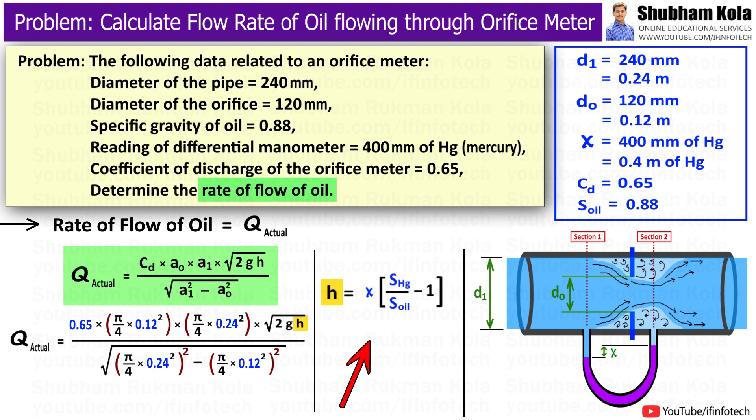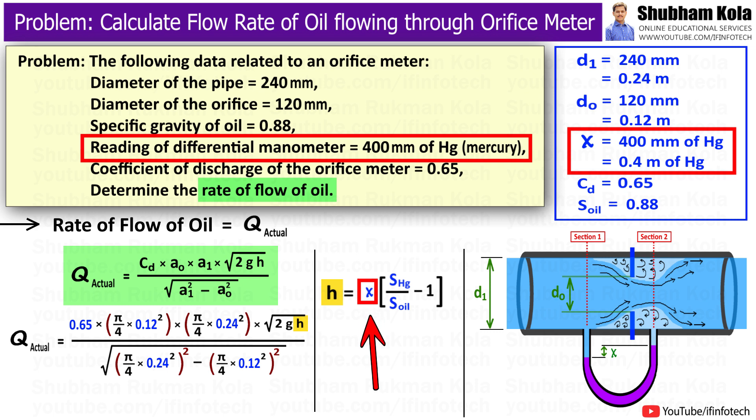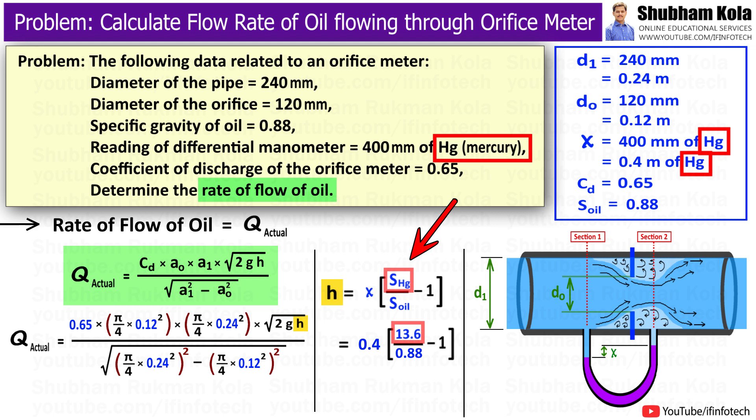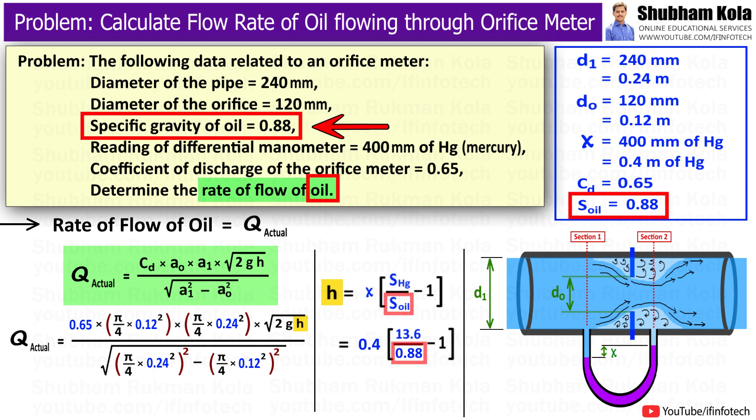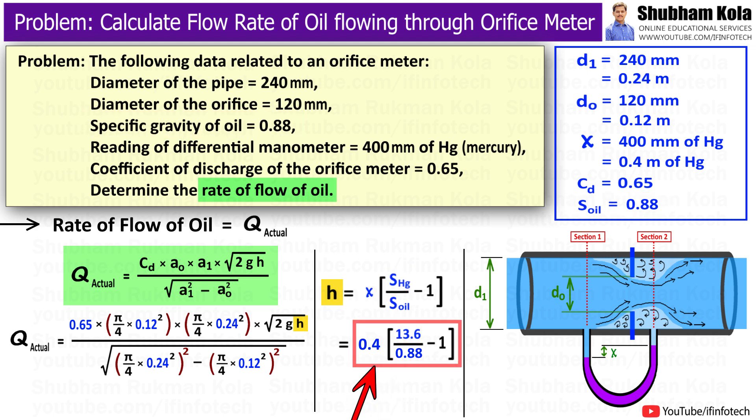So the formula of h will be x times the specific gravity of heavier fluid divided by the specific gravity of lighter fluid, i.e. x × (Sh/Sl). Here Sh is 13.6 for mercury, and the lighter fluid is oil whose specific gravity is given in the problem as 0.88. By calculating this, we will get h equal to 5.78 meters of oil.